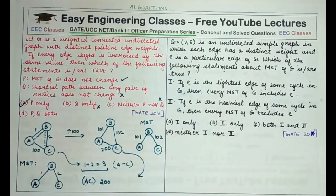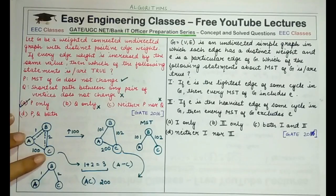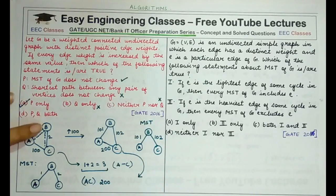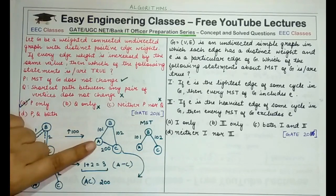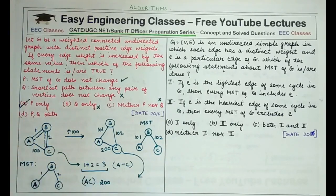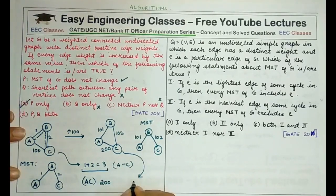Increasing edge weights can change the shortest path between vertices. In this example, the shortest path from A to C was originally via AB and BC, but after the weight increase it became the direct edge AC. Therefore statement Q is incorrect, and the correct answer is option A — P only.